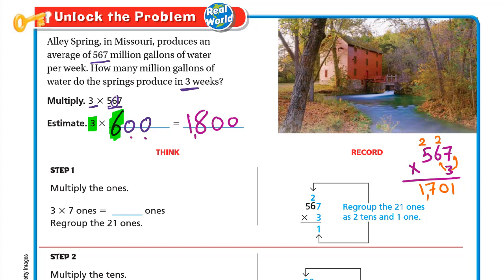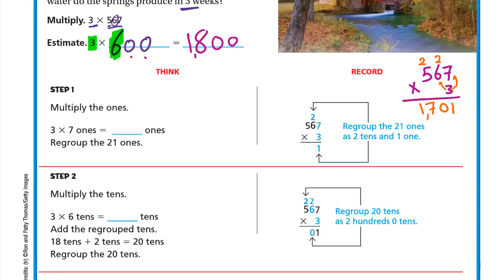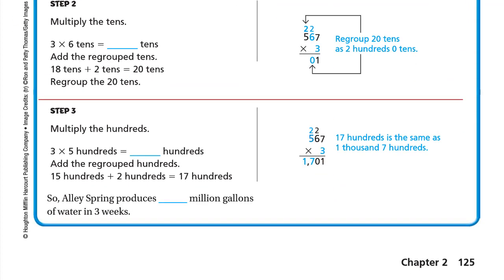Now 3 times 5 is 15, plus the carried 2 is 17. So the answer is 1701. You multiply 3 by the 7, then by the 6, then by the 5, and if you regroup you leave the carry until after you multiply, then add it. So it's 1701 million gallons.